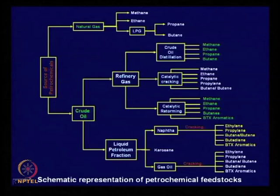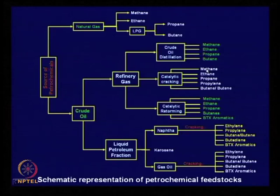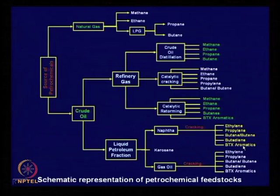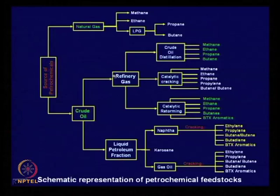This shows a schematic representation of petrochemical feedstocks. The various petrochemicals include methane, ethane, propane, butane, propylene, butene, BTX — benzene, toluene, xylene — and other aromatics. These are obtained from either crude oil or natural gas. They are fractionated; from this we get LPG — liquefied petroleum gas, cooking gas — which contains propane and butane.